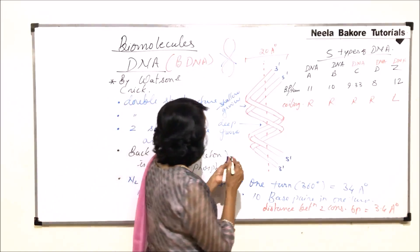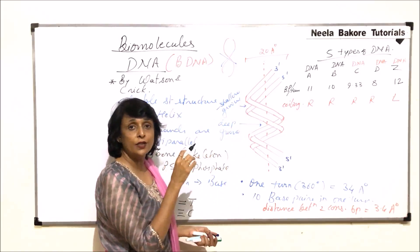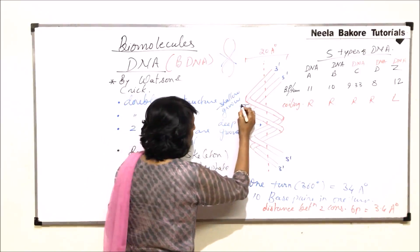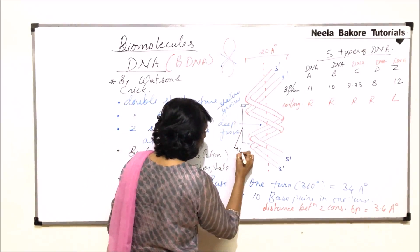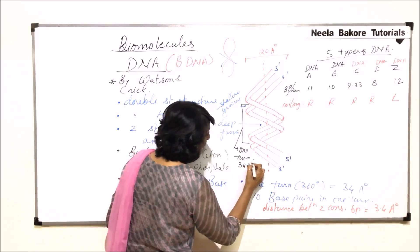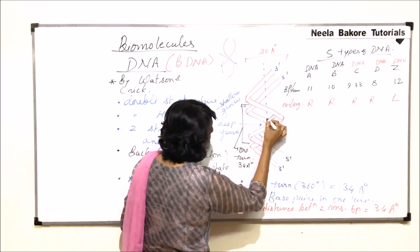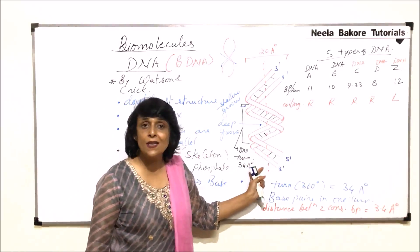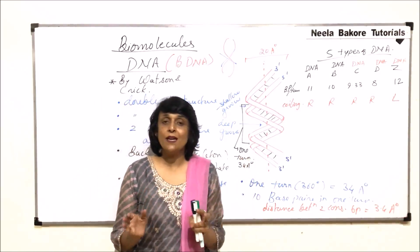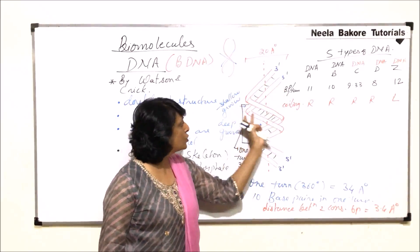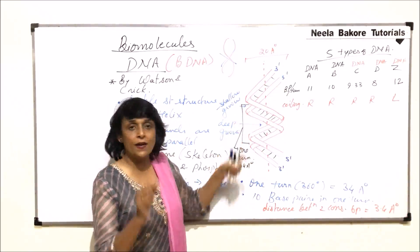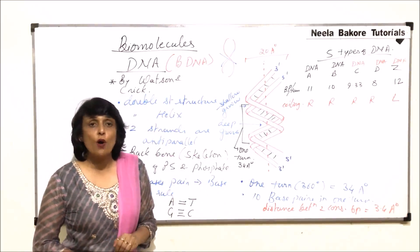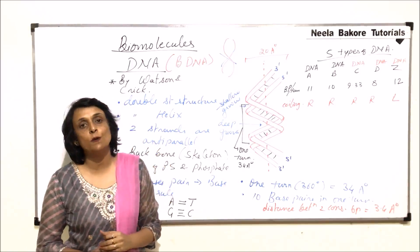The structure studied in detail is DNA B type, given by Watson and Crick. One turn can be measured from shallow groove to shallow groove or deep groove to deep groove — 360 degrees spanning 34 angstroms. The strands made of pentosugar and phosphate are like the railings of a spiral staircase, and the base pairs are like the steps. This is the detailed structure of DNA as given by Watson and Crick.